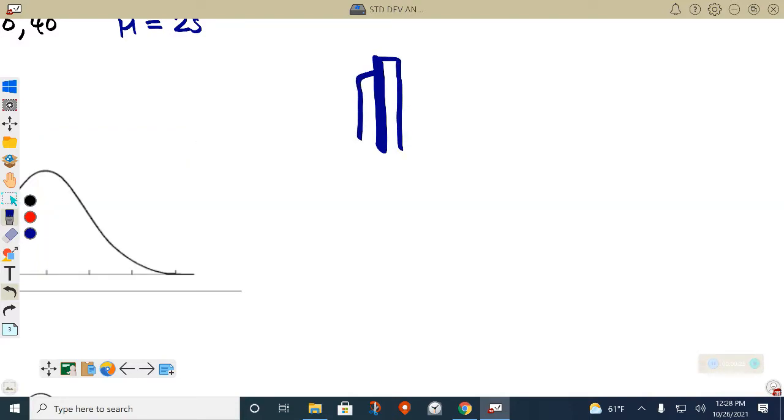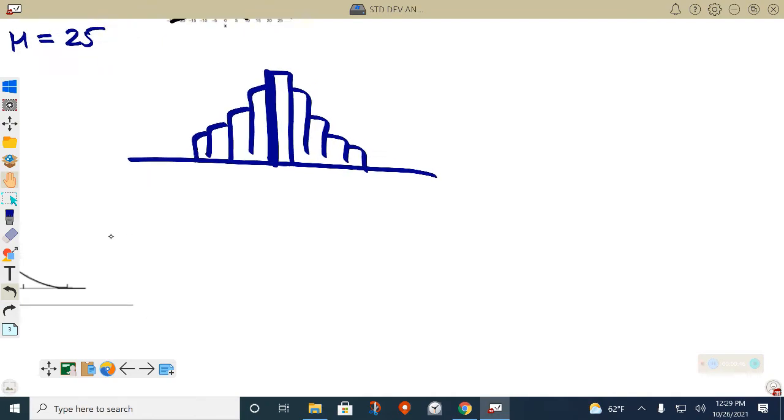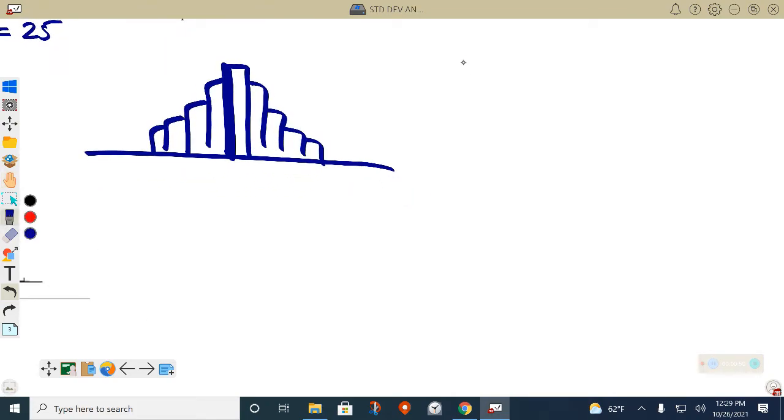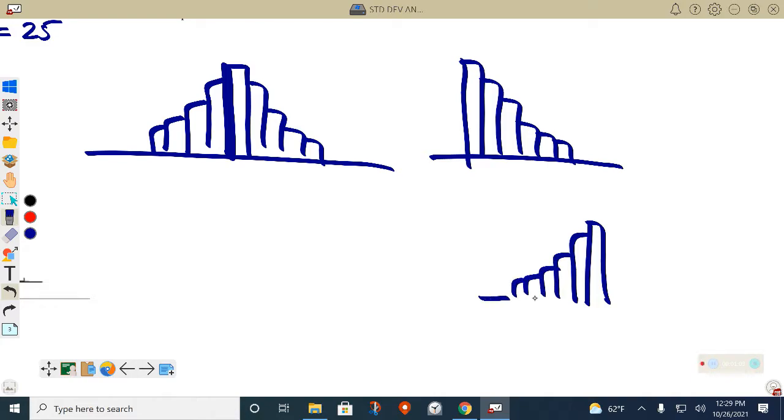Yesterday we talked about histograms that look like this. Does anybody remember the name of that shape? How do we describe the shape of a histogram that looks like that? Versus a histogram that looks like this, or when the data looks like this. Symmetrical. Symmetrical has the idea that the left and right center are mirror images of each other.